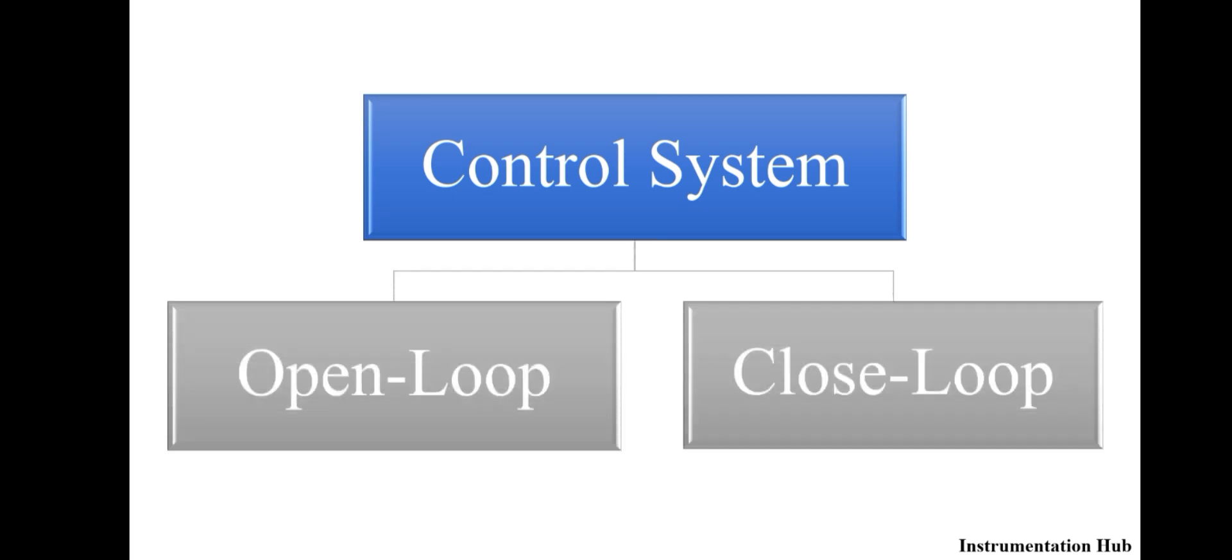The first classification is closed loop control system and open loop control system. In this, the main thing that you have to remember is feedback. In the closed loop control system, feedback is present, whereas in open loop control system, feedback is not present.